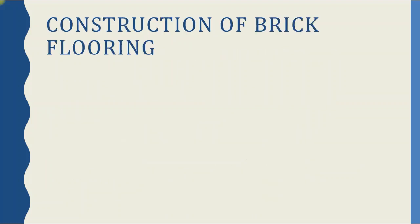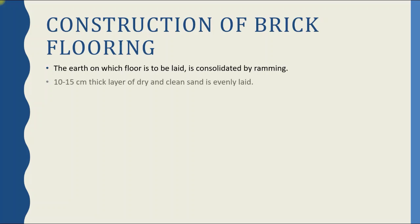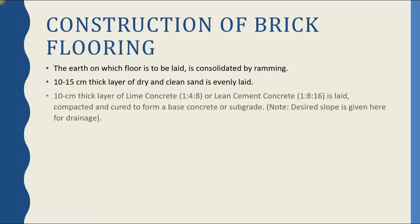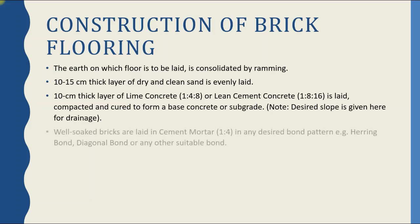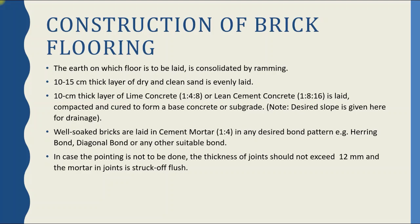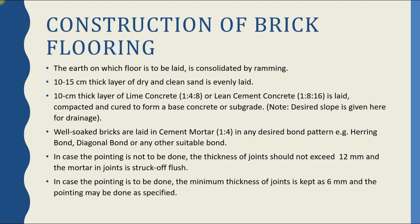The method of construction of brick flooring: the earth on which the floor is to be laid is consolidated by ramming. Then a 10–15 cm thick layer of dry and clean sand is evenly laid. On this, a 10 cm thick layer of lime concrete or lean cement concrete is laid, compacted and cured to form the base concrete, also known as subgrade. The desired slope is also given for drainage at this stage. Then well-soaked bricks are laid in cement mortar 1:4 in any desired bond pattern such as herringbone or diagonal bond. If pointing is not to be done, the joint thickness should not exceed 12 mm and mortar is struck off flush. If pointing is to be done, the minimum joint thickness is 6 mm. Curing is done for 7 days.